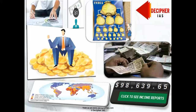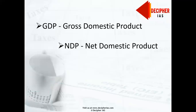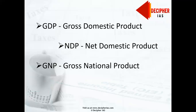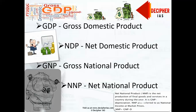These are: Gross Domestic Product, Net Domestic Product, Gross National Product, and Net National Product — we can say GDP, NDP, GNP, and NNP. All are forms of national income, but are different from each other. They all tell a different story about the income of a nation in their own specific way.